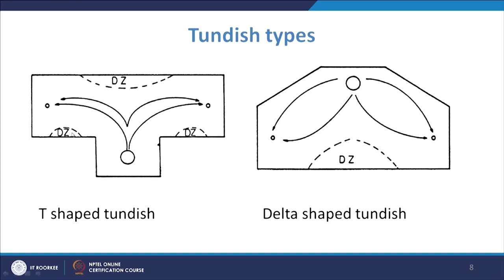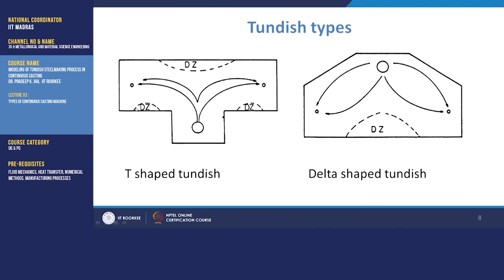In the T-shape tundish, the metal should pass through the outlets. One challenge is that certain zones shown as DZ — dead zones — are present. When we talk about the volume of the tundish, you have the plug zone, mixed zone, or dead zone. The dead zone is where the metal does not remain active and becomes stagnant. In the T-shape tundish it is likely that dead zones are formed in certain regions because part of the flow does not reach those areas and metal velocity becomes too small.